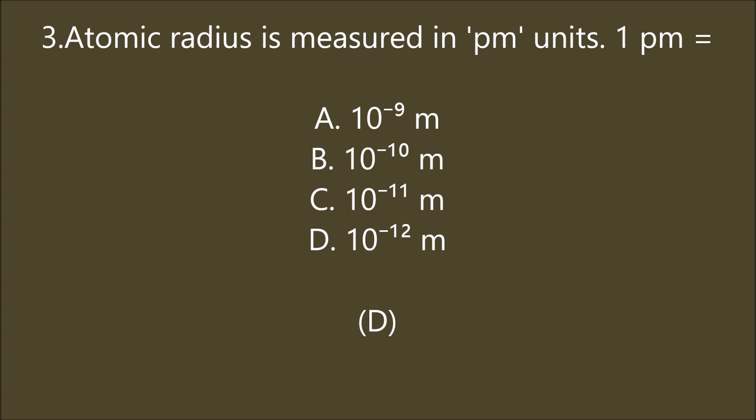Atomic radius is measured in picometer units. 1 pm is equal to: 10 to the power minus 9 meter, 10 to the power minus 10 meter, 10 to the power minus 11 meter, or 10 to the power minus 12 meter. D is the right answer. Atomic radius of an element may be defined as the distance from the center of the nucleus to its outermost shell. Atomic radius increases from top to bottom in a group, whereas it decreases across a period from left to right.